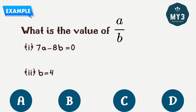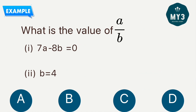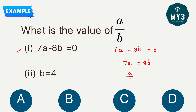Example 1: What is the value of a/b? Statement 1: 7a − 8b = 0. Statement 2: b = 4. Looking at statement 1, 7a − 8b = 0 means 7a = 8b, so a/b = 8/7. We can figure out the value of a/b from statement number one alone, so we directly mark the answer as option A and eliminate the other options.